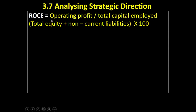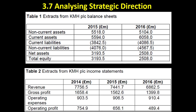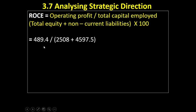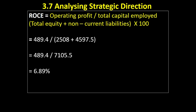Let's run through the figures. I'm going to calculate it for 2016. The operating profit was 489, and adding equity and non-current liabilities gives total capital employed of 7,105. So that's 489 divided by 7,105, which gives a return on capital employed of 6.89%. What that means is that for every one pound invested into the business — either by shareholders or through borrowed money — I'm getting a return of 6.89%, in other words almost seven pence back for every pound invested, in terms of profit.